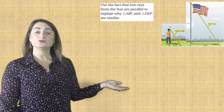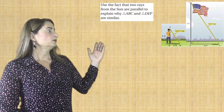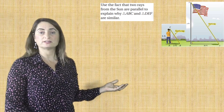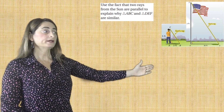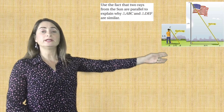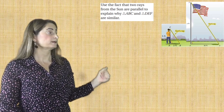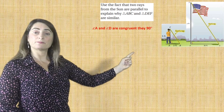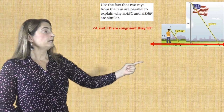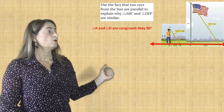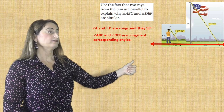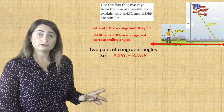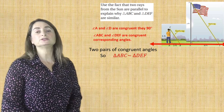Here's another example using indirect measurement to find the missing side length. Use the fact that the two rays formed from the sun are parallel to explain why triangle ABC and triangle DEF are similar. We use the triangle with the height of a person and their shadow to create similar triangles. Angle A and angle D are congruent because they are 90-degree angles. Since the sun rays are parallel, draw a red line connecting the two parallel lines — this becomes the transversal, which makes angle ABC and angle DEF congruent because they are corresponding angles. Two pairs of angles are congruent, therefore the triangles are similar.